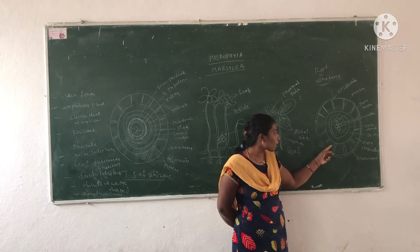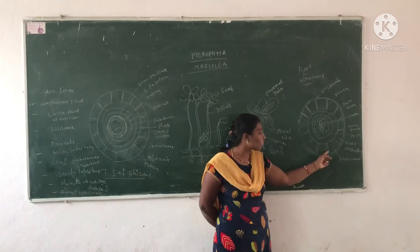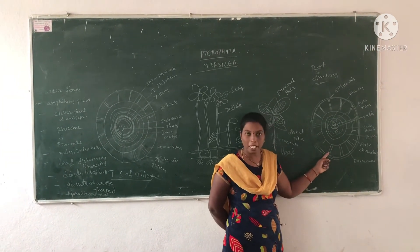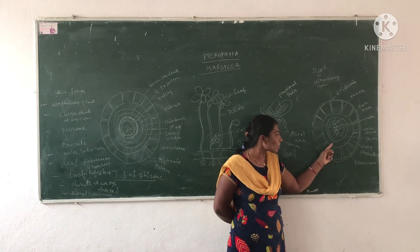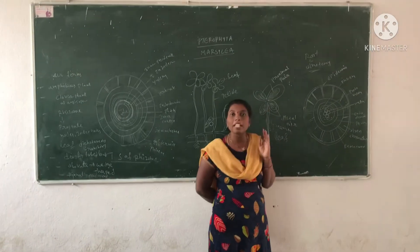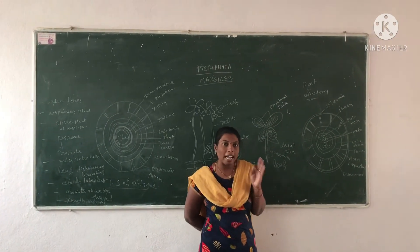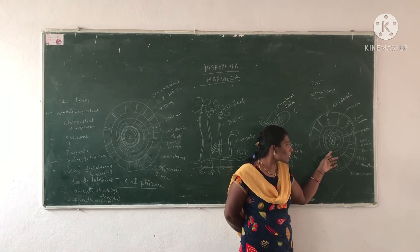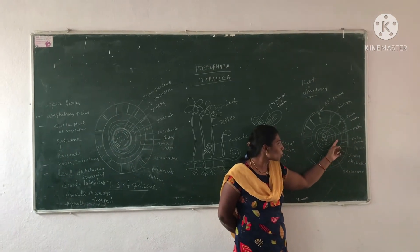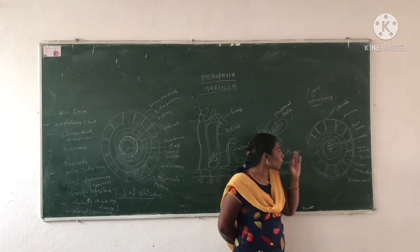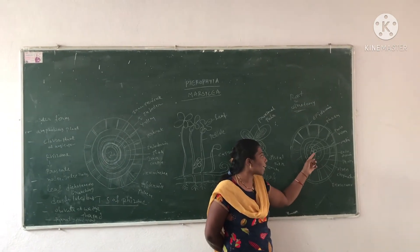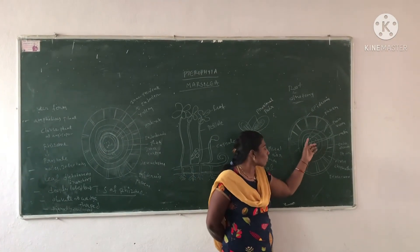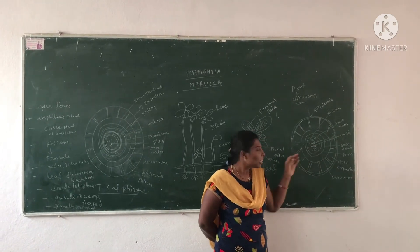The outer cortex has a number of air cavities. In between these air cavities, there are filament-like structures called trabeculae. The middle cortex is composed of sclerenchyma, and the inner cortex is composed of parenchyma. Coming to the stellar portion, the first outer layer is the endodermis, followed by the pericycle. The middle region has four metaxylem elements, with protoxylem on both sides. The space in between is occupied by phloem. This is the root anatomy.